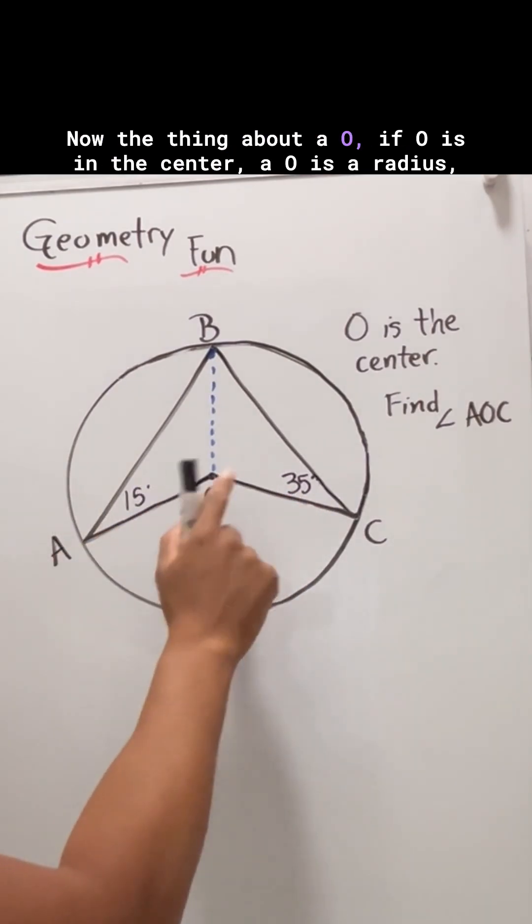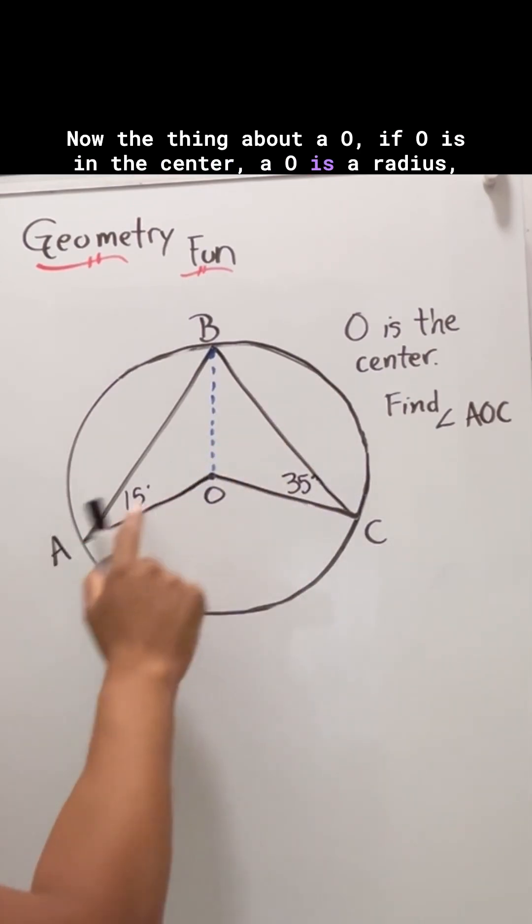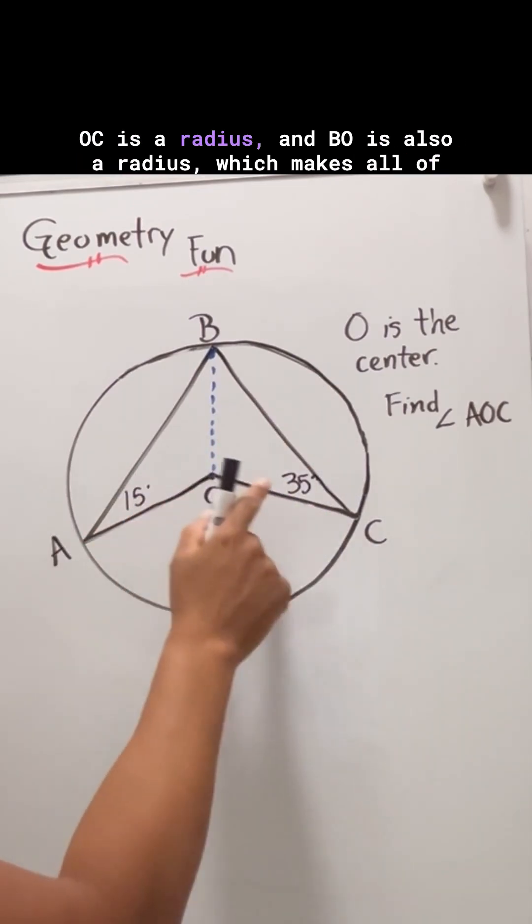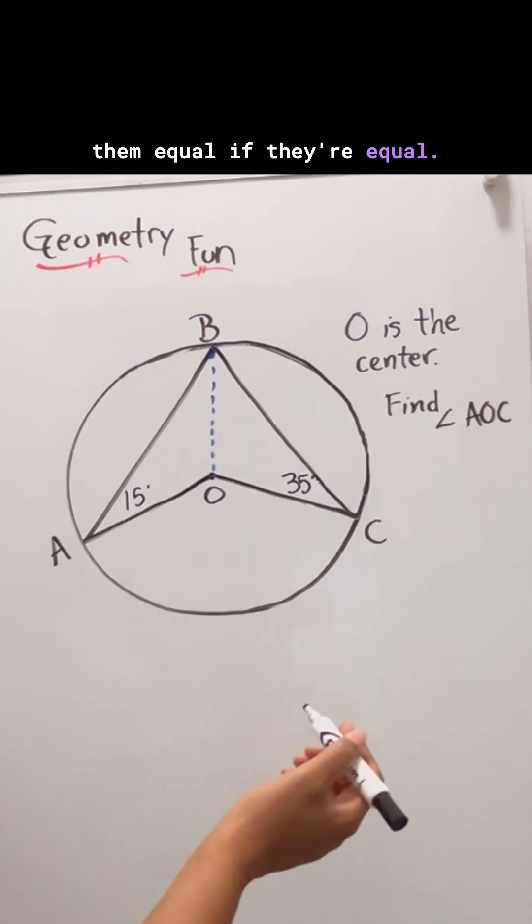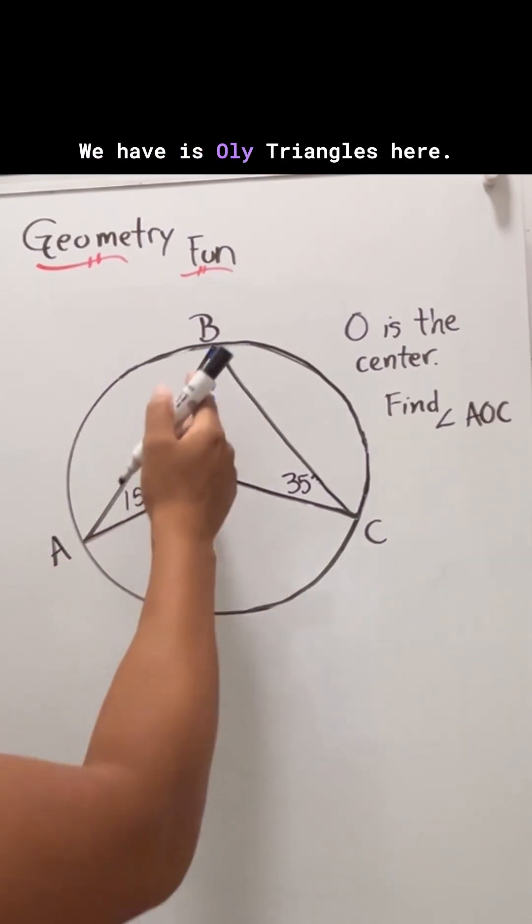Now, if O is in the center, AO is a radius, OC is a radius, and BO is also a radius, which makes all of them equal. If they're equal, we have isosceles triangles.